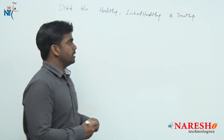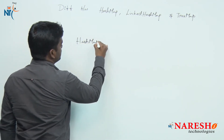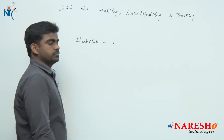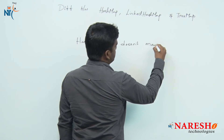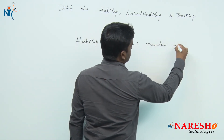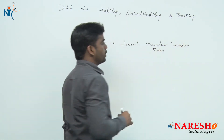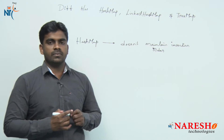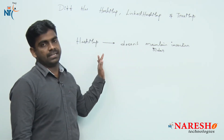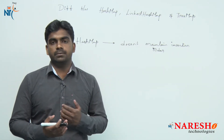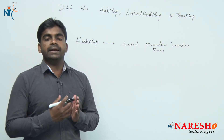The main difference is HashMap does not maintain insertion order. It does not maintain insertion order means in which order we are inserting the elements, in the same order you cannot retrieve the elements. When we try to display all the elements inserted into the HashMap, it will display the elements randomly.